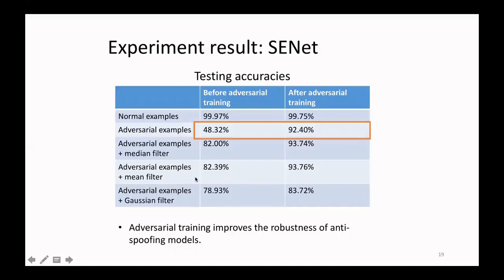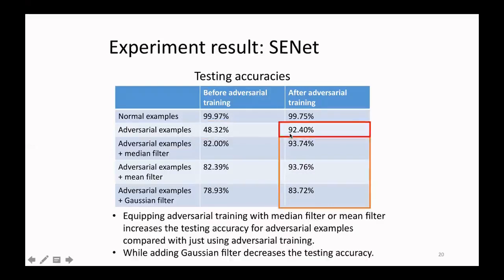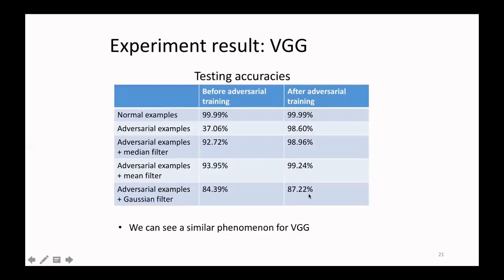Before adversarial training, the testing accuracy for adversarial examples is below 50%. After adversarial training, it increases to over 90%, so adversarial training improves the robustness of anti-spoofing models. With only adversarial training, the testing accuracy is 92.4%. Adding median filter or mean filter helps increase the testing accuracy further. However, adding Gaussian filter decreases the testing accuracy — so in our experiment setting, median filter and mean filter are more desirable than Gaussian filter. Similar phenomena are observed for VGG compared with SENET.